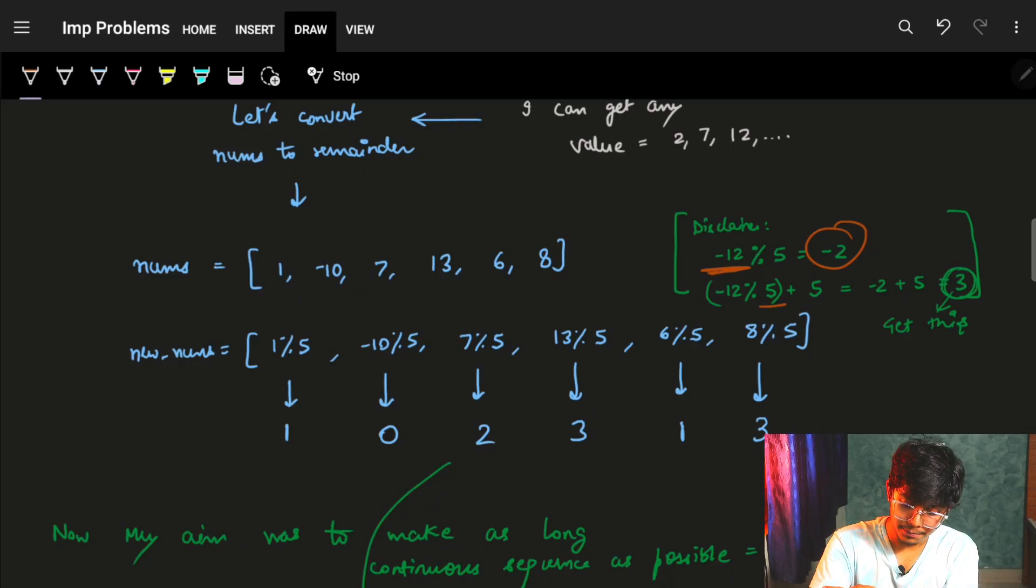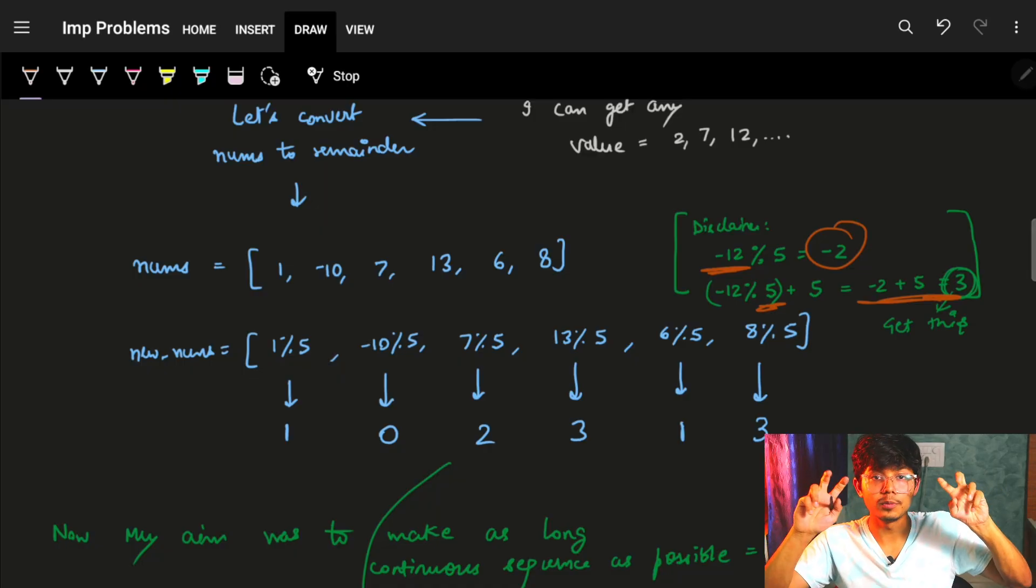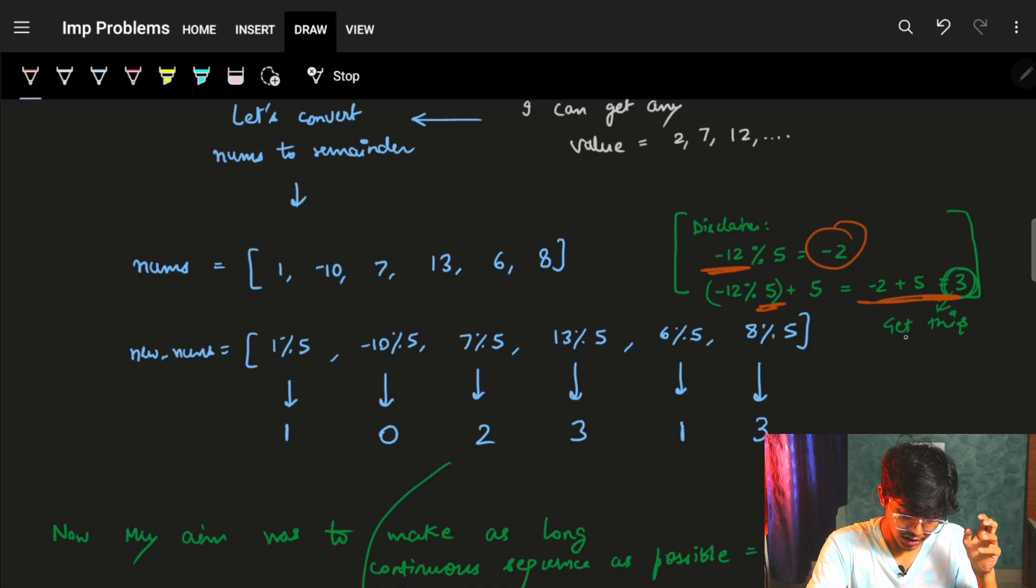So I need to add a plus 5 to get a 3, which means minus 12 mod 5 will actually now become a 3. So after this, I can just get a 3, an 8 and so on.